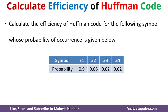In this case, we have been given four symbols A1, A2, A3, and A4, and the associated probabilities are 0.9, 0.06, 0.02, and 0.02 respectively. Given this particular data, we need to find the efficiency of Huffman coding.